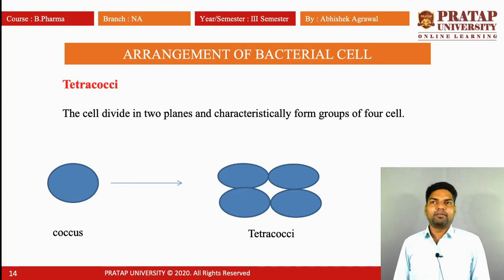Third is tetracocci. The cell divides in two planes — horizontal and vertical — and characteristically forms groups of four cells. The coccus is divided into four cells; this is called tetracocci.